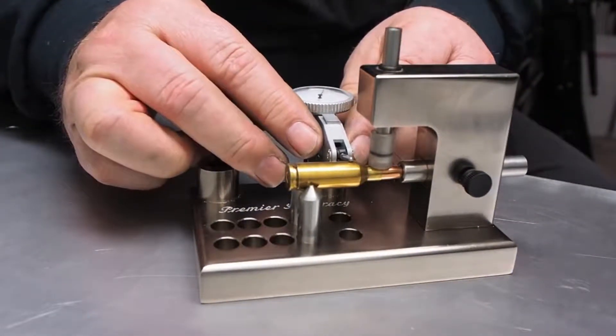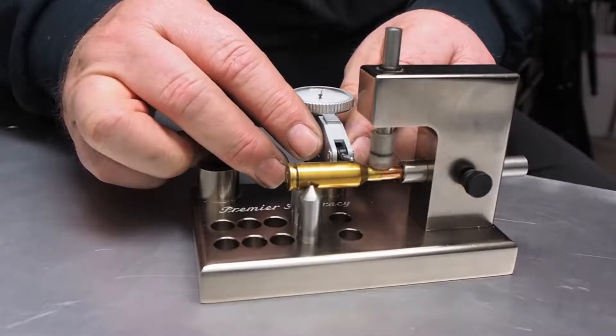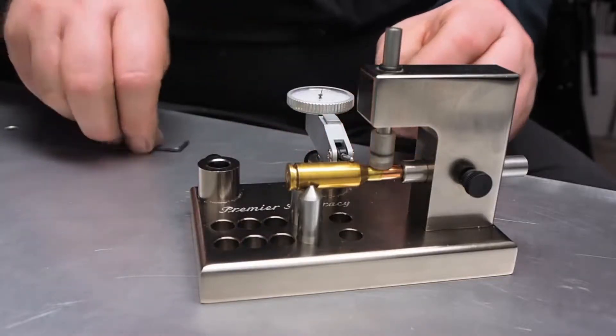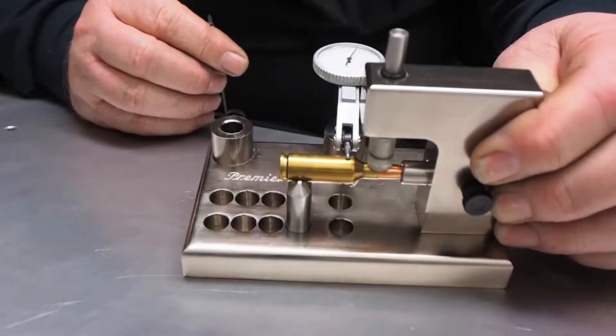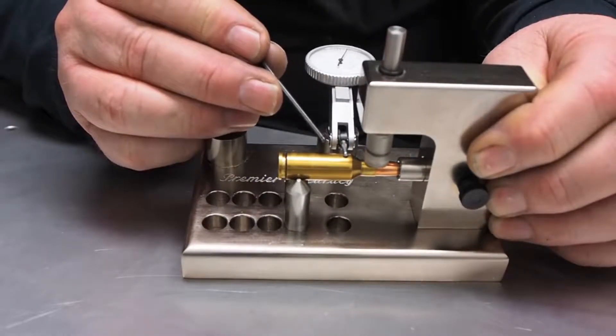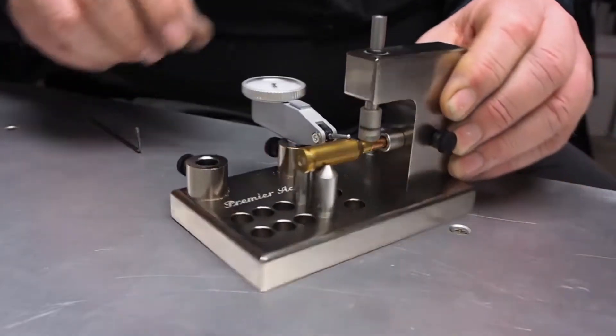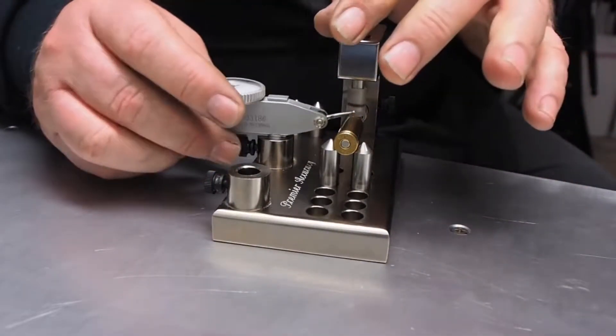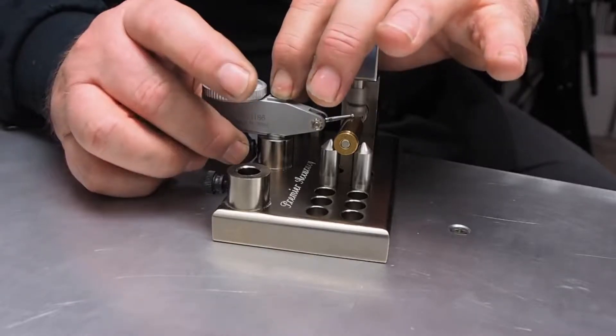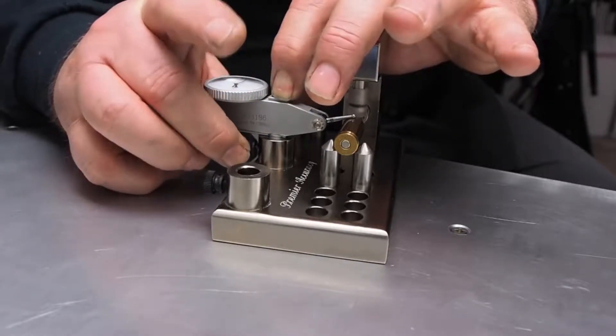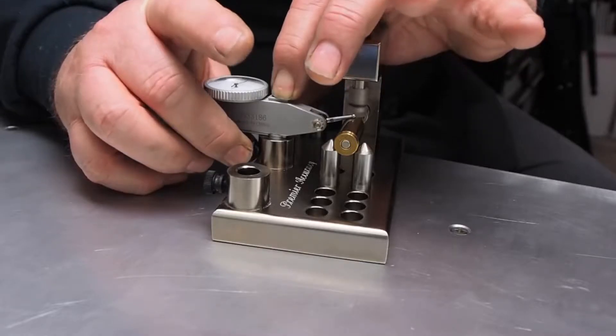You want to bring the indicator in, again, about an eighth of an inch away from the shoulder. So you can see in the video where I have the needle. I'm going to come back behind with finger pressure, holding down. Now I'm going to check the runout of this case.